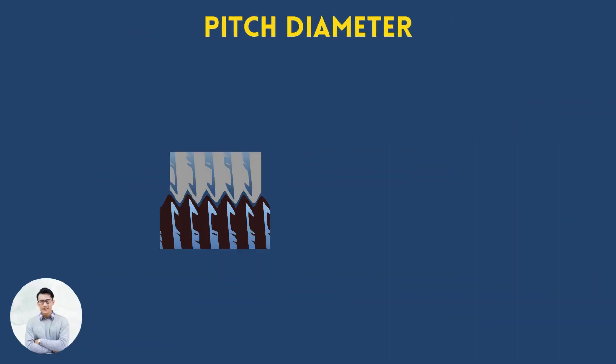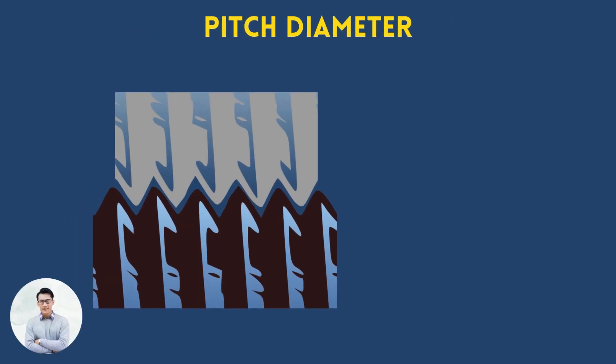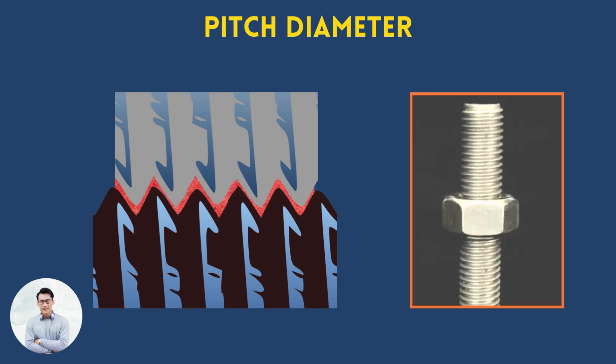It is where the male and female threads meet. The allowance between the pitch diameters of two thread components determines the behavior of the assembly.